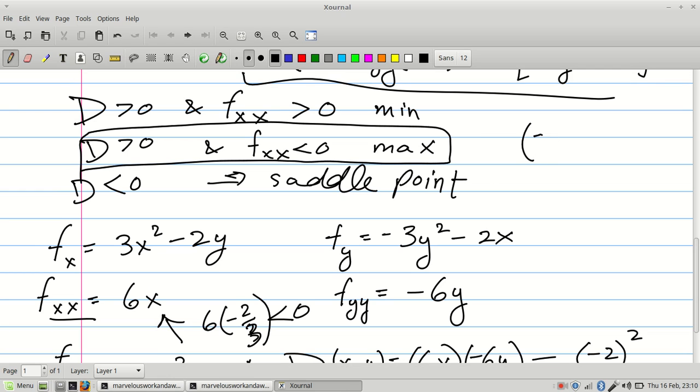So again, you have negative 2 thirds, 2 thirds being a max and (0, 0) being a saddle point. Thanks for watching.